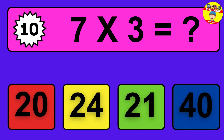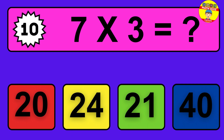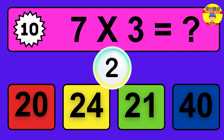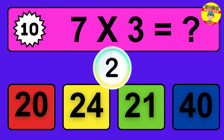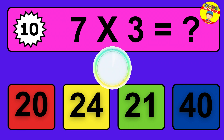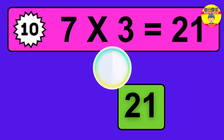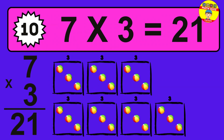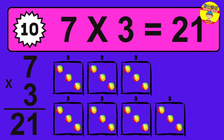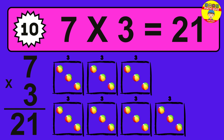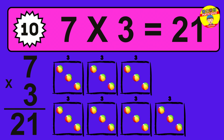Question 10. 7 times 3 equals what? The answer is 7 times 3 is 21. To calculate, we have 7 groups with 3 balls each one. So how many balls do we have? 21 balls.